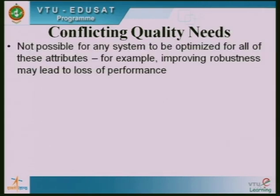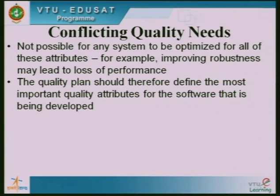Conflicting quality needs: many times it is not possible to optimize a system for all these attributes. For example, improving robustness may lead to a loss of performance. To make the software robust, any wrong input must be tested and handled, which requires additional code. Once that extra code is added, performance decreases. So robustness increasing leads to the loss of performance. The quality plan should therefore define only the important quality attributes for the software being developed, along with a definition of the quality assessment process — an agreed way of assessing whether a given quality is present in the product.